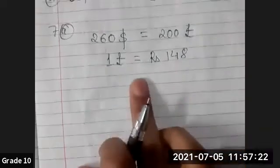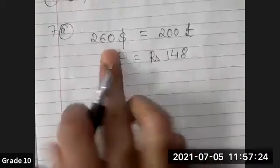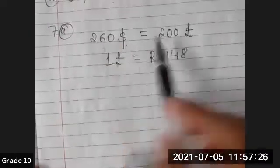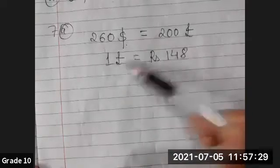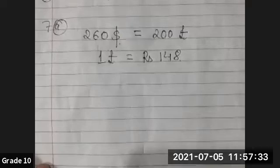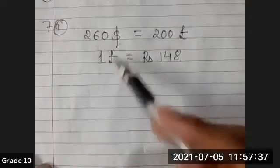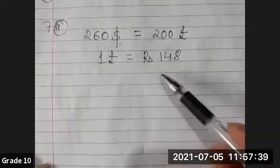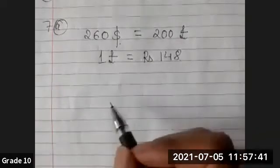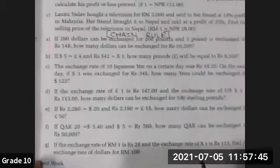Now you can see one thing here: I have not repeated the same currency on the same side. Pound was repeated but I did not write it on the right hand side and left hand side, because in chain rule the same thing should not come on the same side, it should come on two different sides.